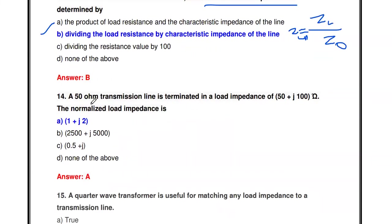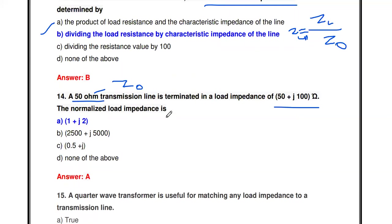A 50 ohm transmission line is terminated in a load impedance of 50 + j100 ohms. Find the normalized load impedance. Here Z₀ = 50 ohms and ZL = 50 + j100 ohms. The normalized load impedance = ZL / Z₀ = (50 + j100) / 50 = 1 + j2 ohms.